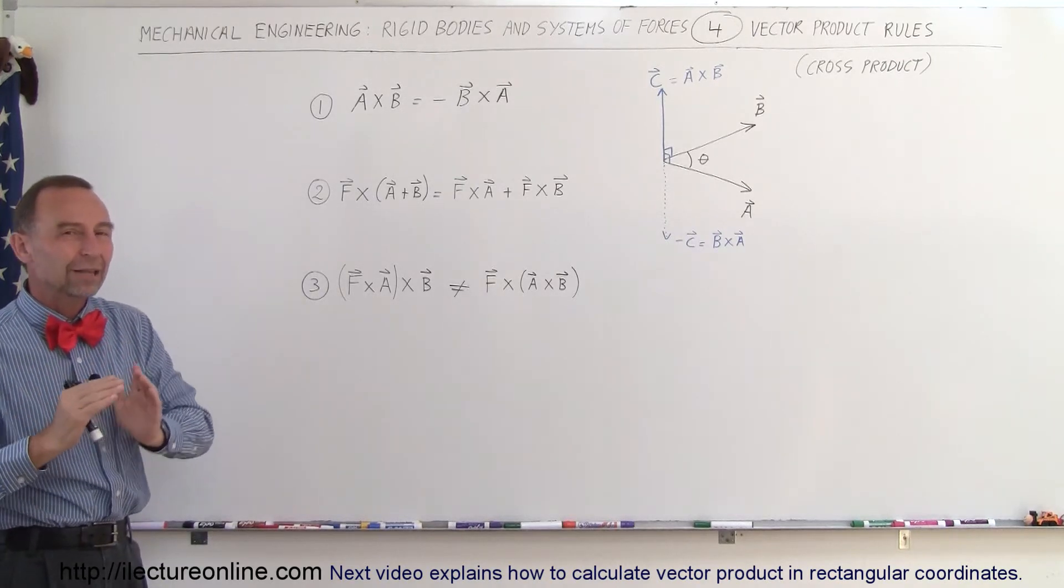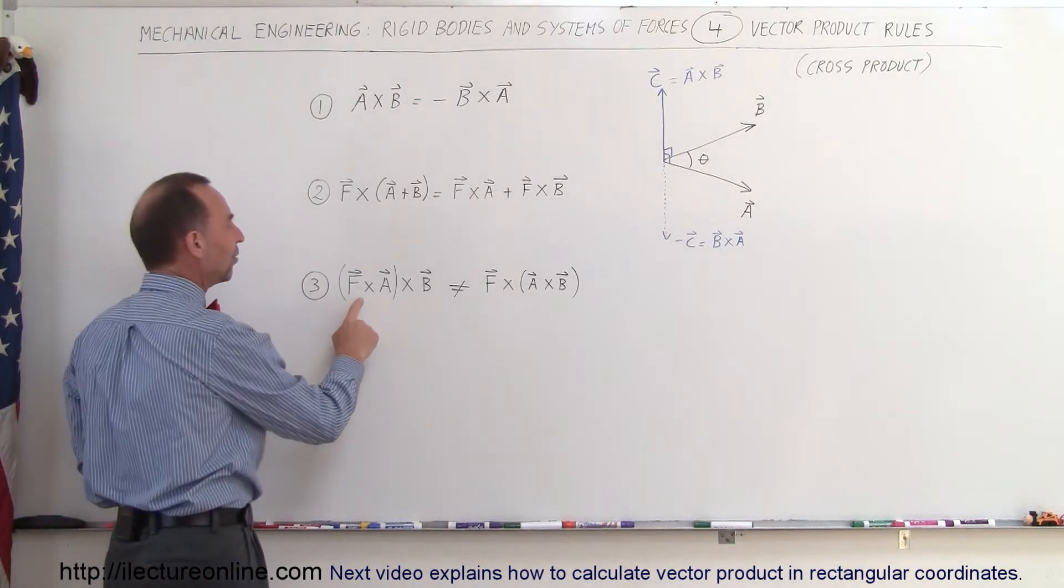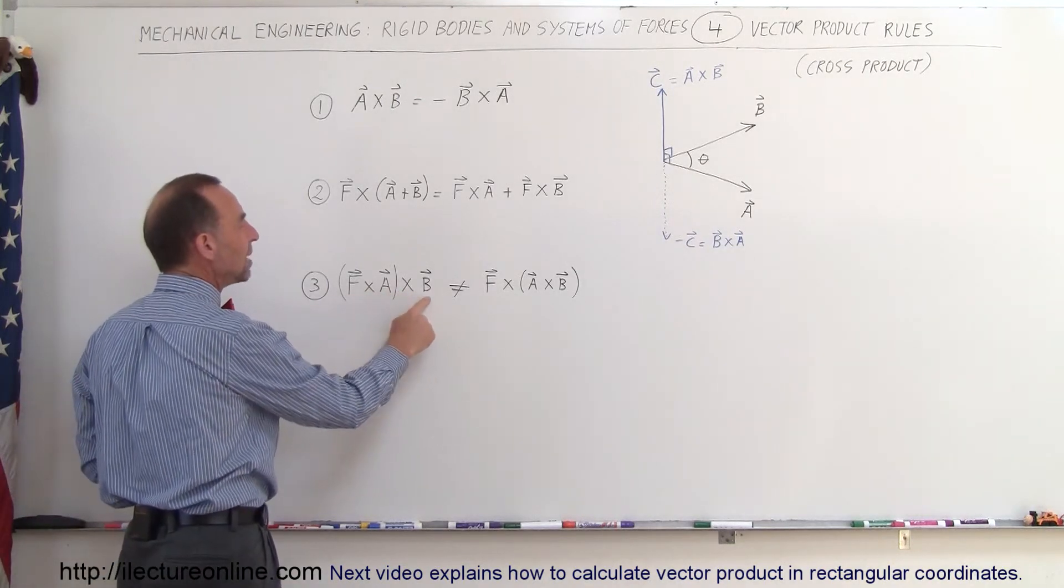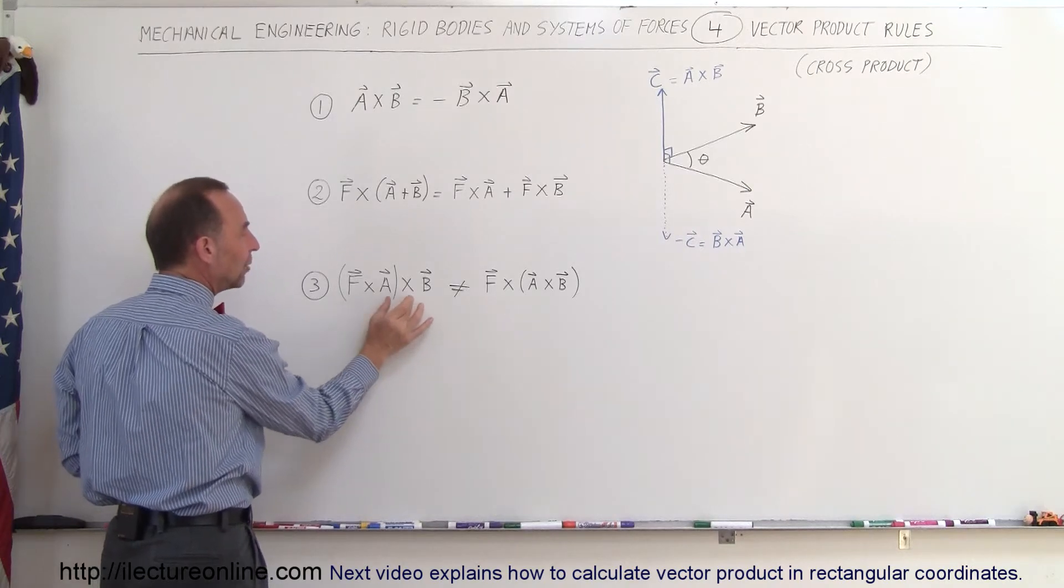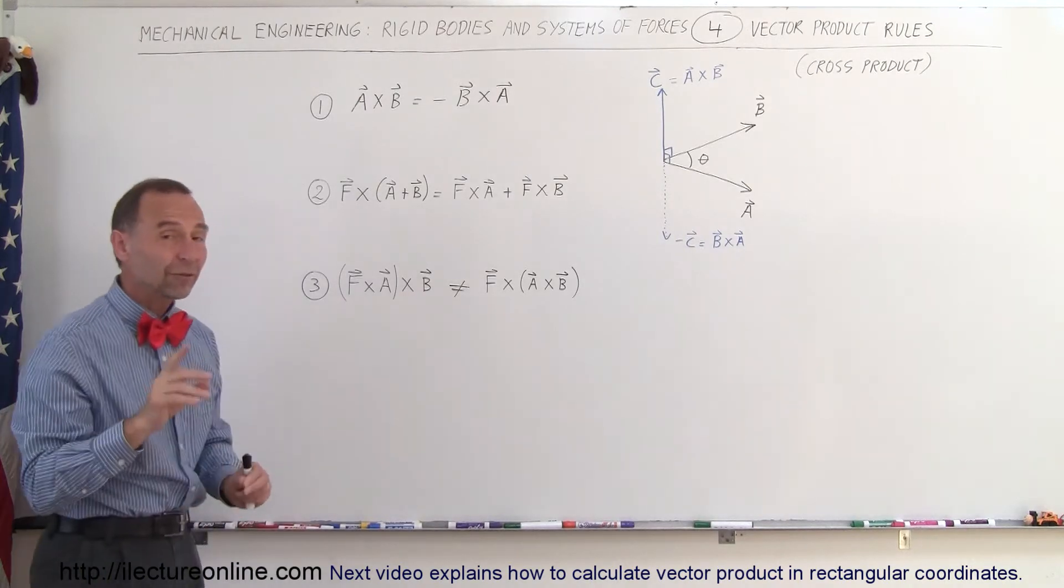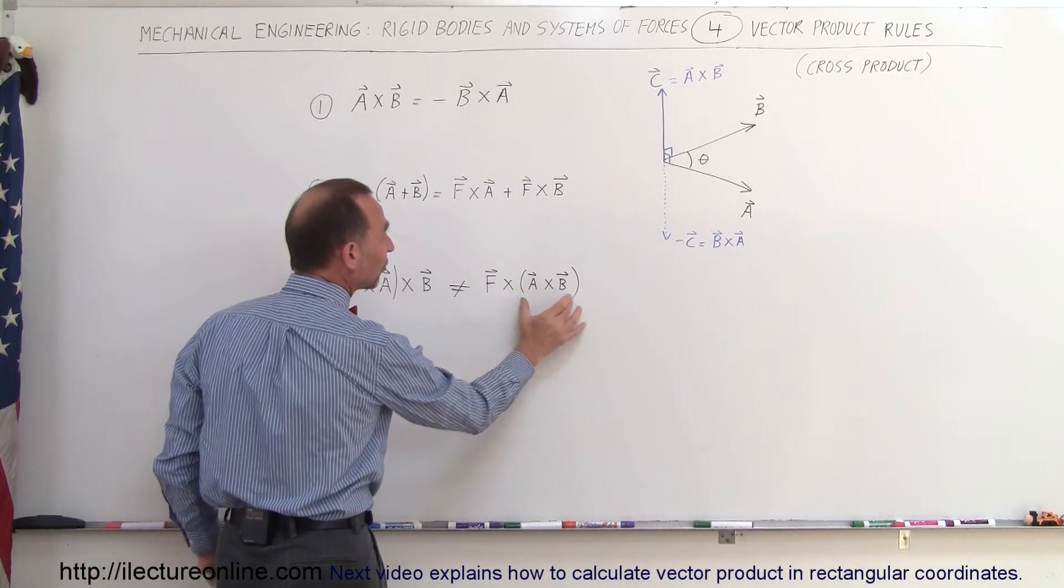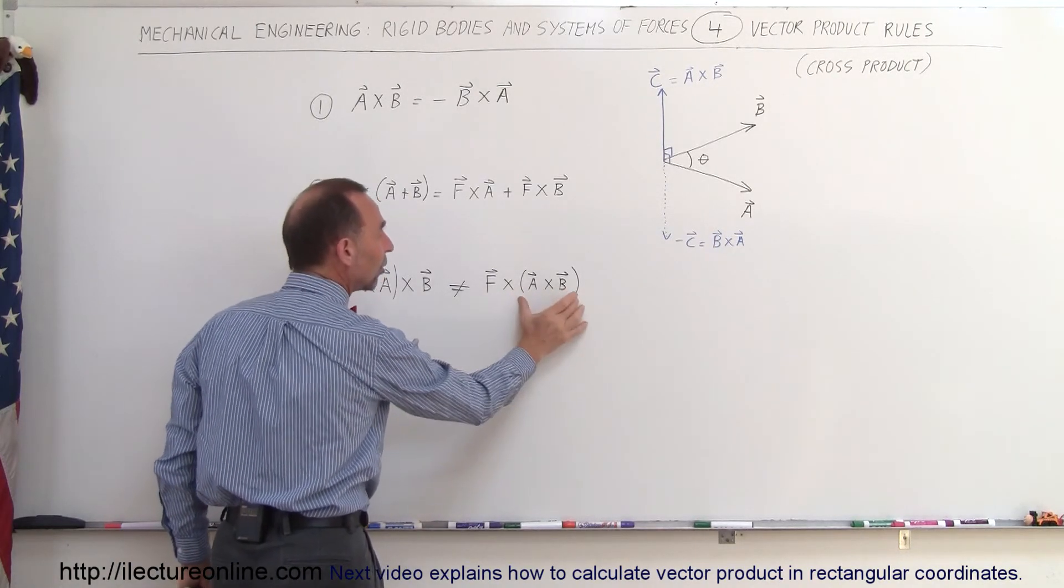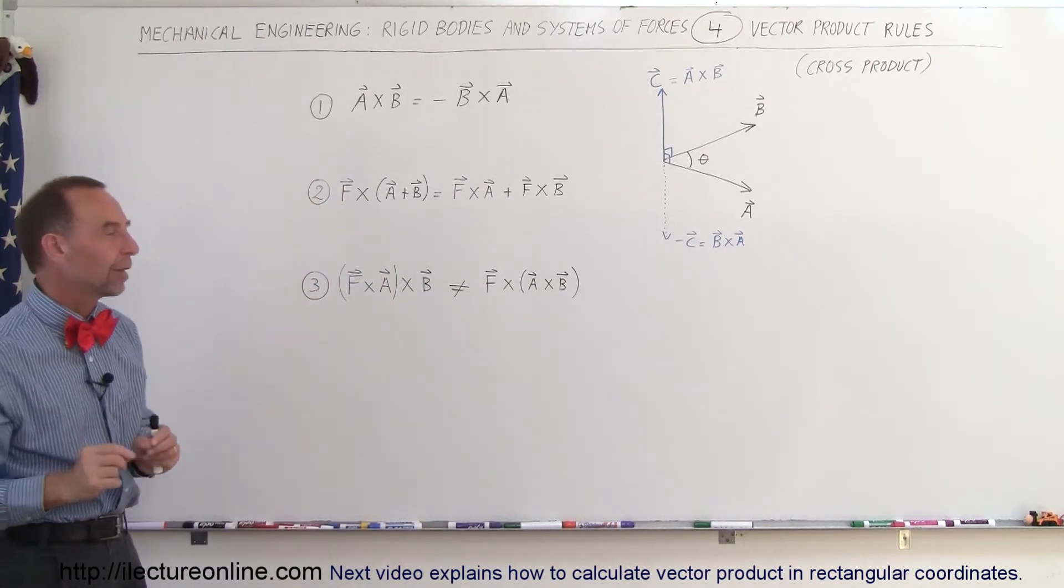However, the associative property does not work for cross products or vector products. Here we have F cross A cross B, if we do F cross A first, and then we take that result, and do cross B, you get a different result, so it's not the same as if you do A cross B first, and then you do F cross the result of that. You will not get the same result, so you got to be very careful about doing that.